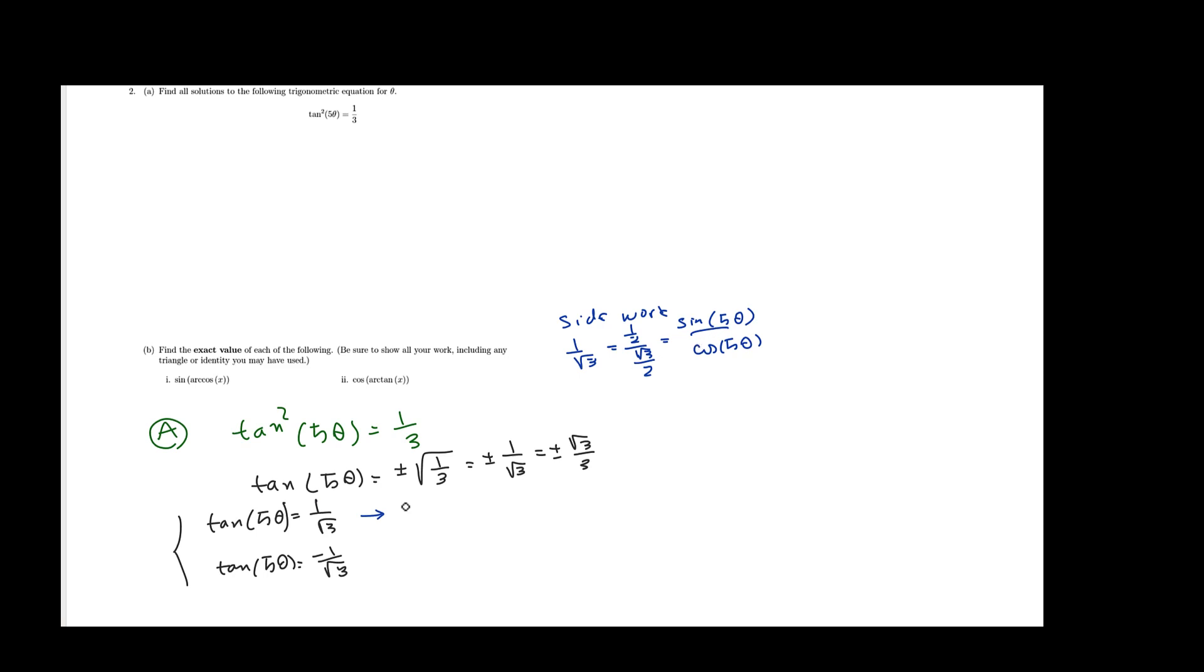So here, I can say that 5 theta has to be, according to this, is going to be equal to pi over 6 plus k pi. And that one is equal to 5 theta, because negative 1 over square root of 3, I can write it as negative 1 half over square root of 3 over 2. And with the sine 5 theta over cosine 5 theta, and with the negative value, I can either say, look in the third quadrant,